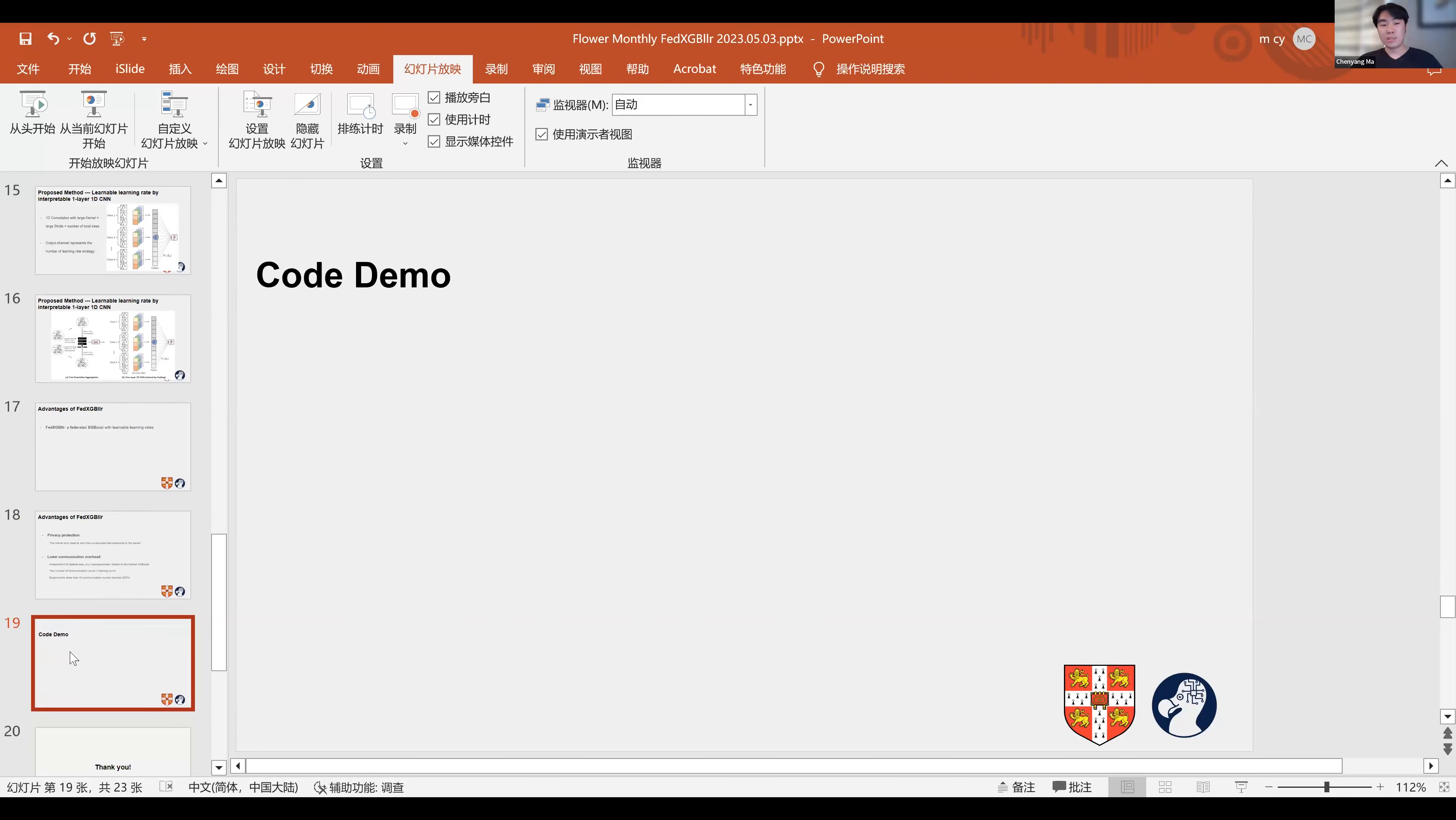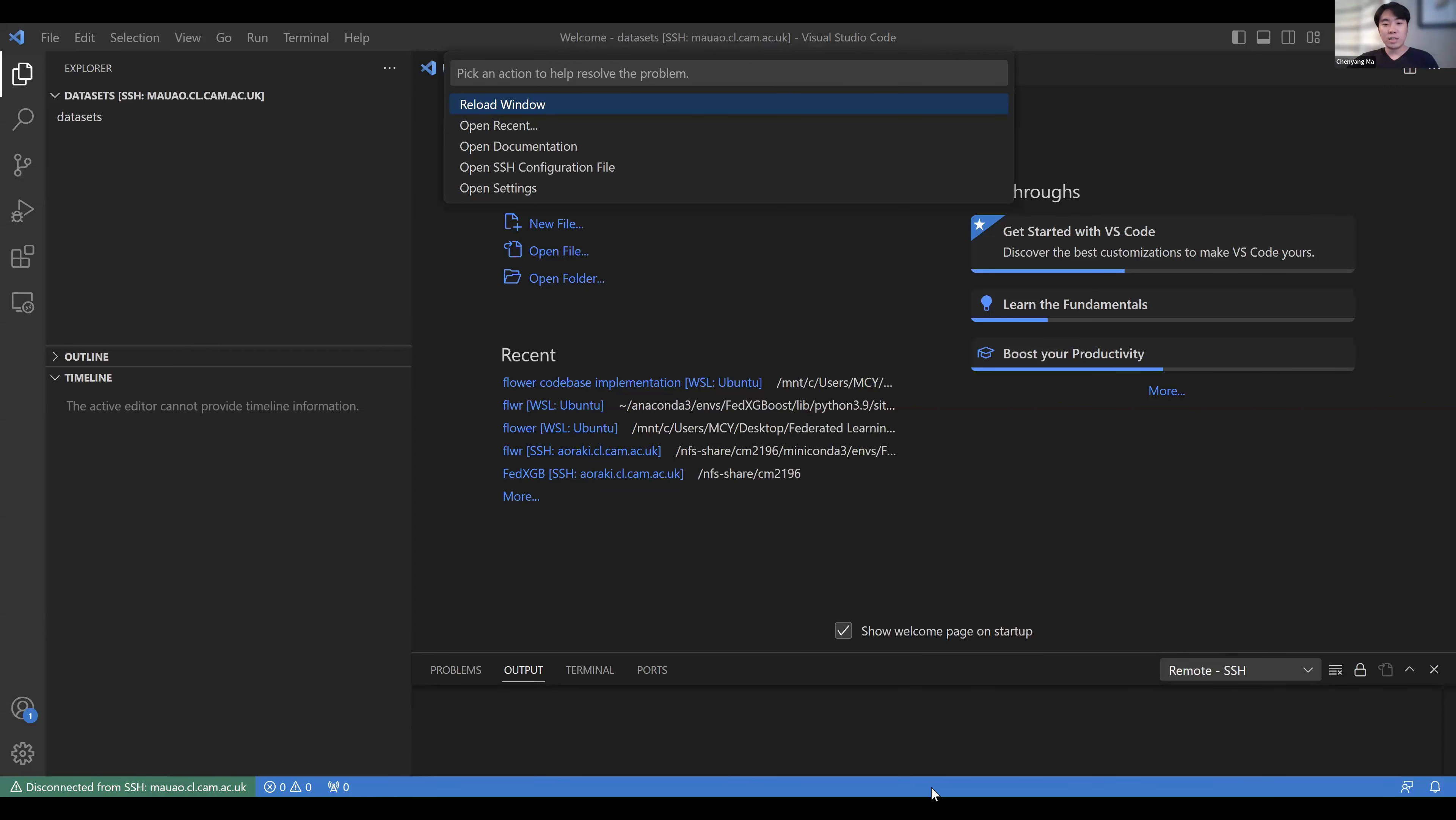That's all for the method. Now I will give a brief overview, a short demo of the code, which is released to the Flower community. This code is the same one as released on Flower and this is the Google Colab file.